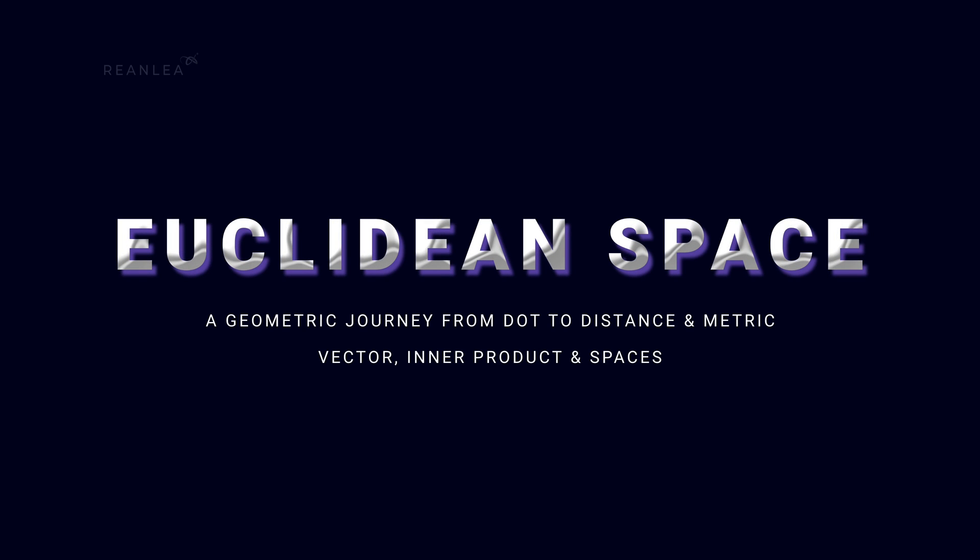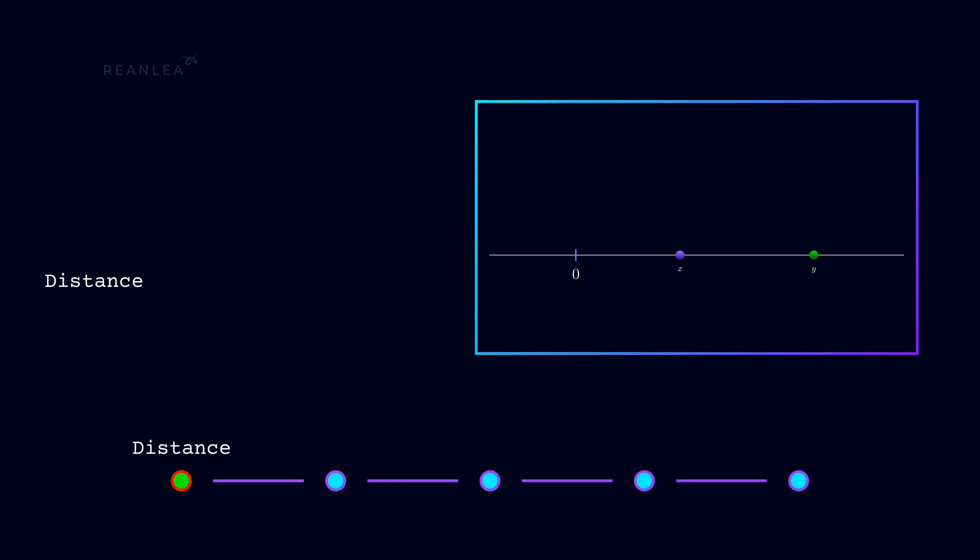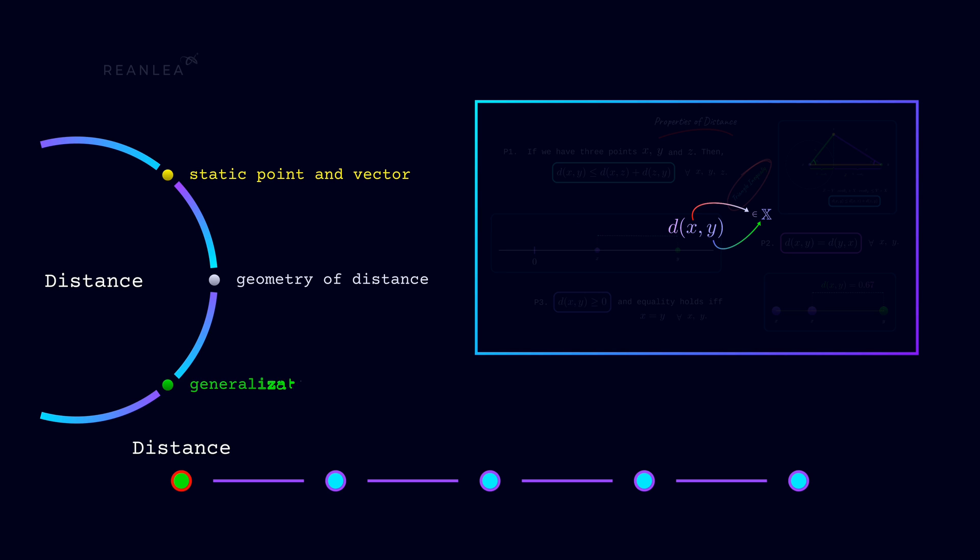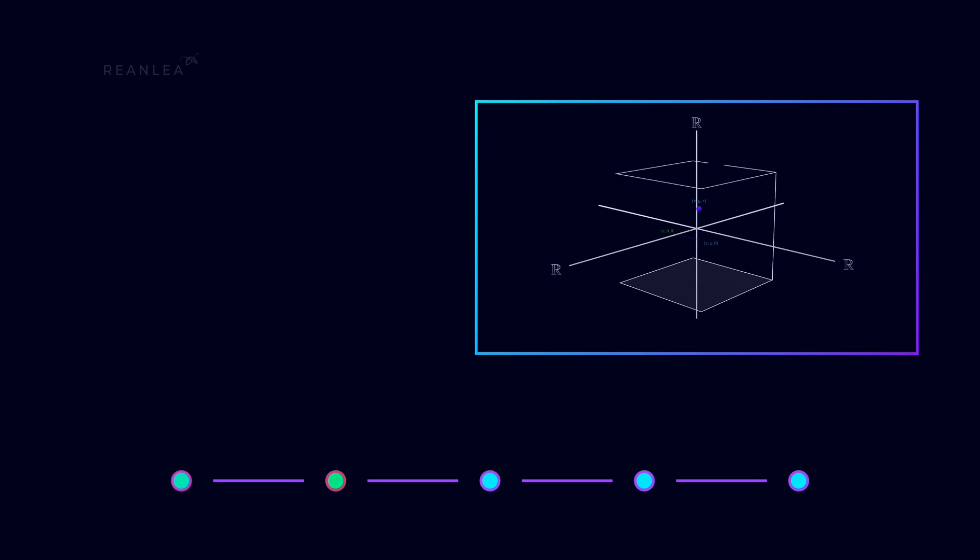And here we have eight lectures starting with distance and its fundamentals, like overview on the static point and vector and the differences and fundamental properties of distance and their geometric interpretation. Also, how can we define the metric by generalizing the idea of distance between two vectors.